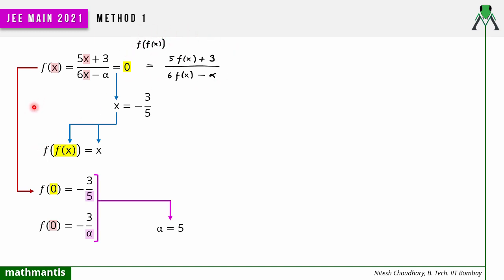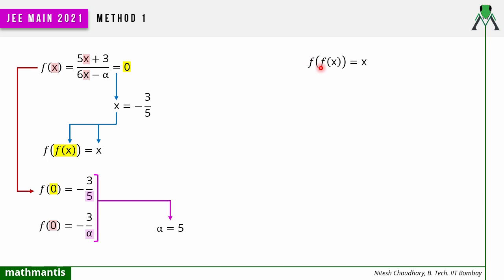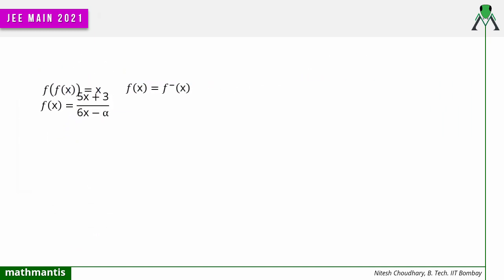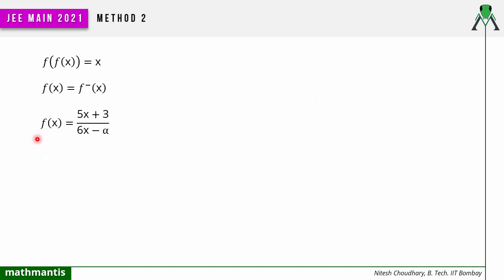I will now tell you one more method: Method 2, which involves the property of the inverse of a function. We know that if the composition of two functions equals x, then one function is the inverse of the other. So f(f(x)) = x means f(x) is the inverse of f(x). Taking inverse on both sides, f⁻¹(x) equals f(x) — the function is its own inverse.